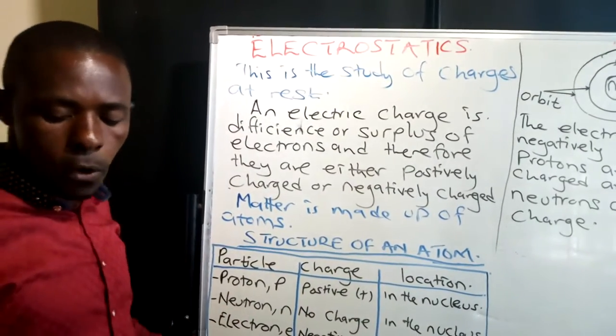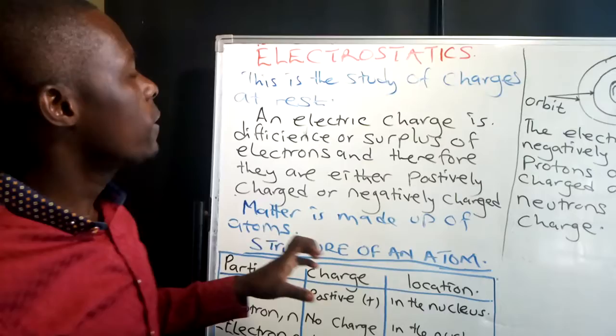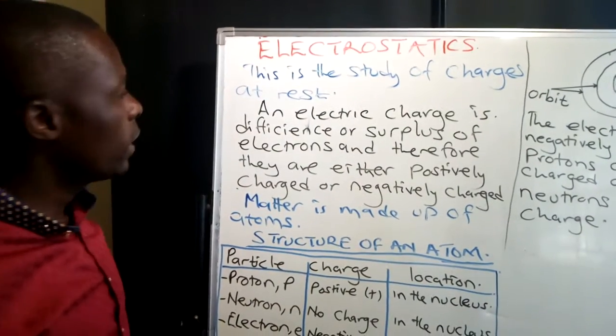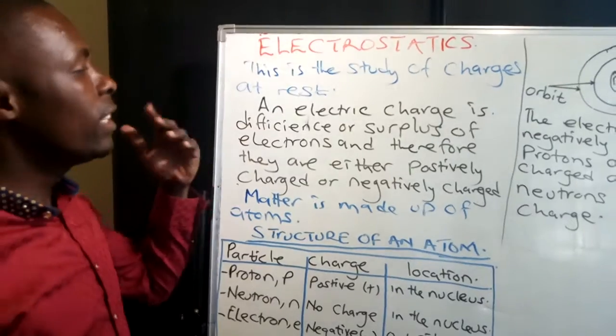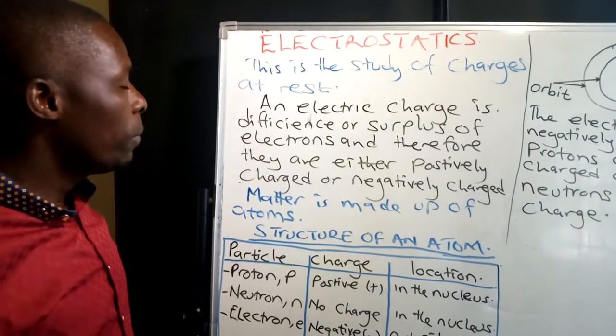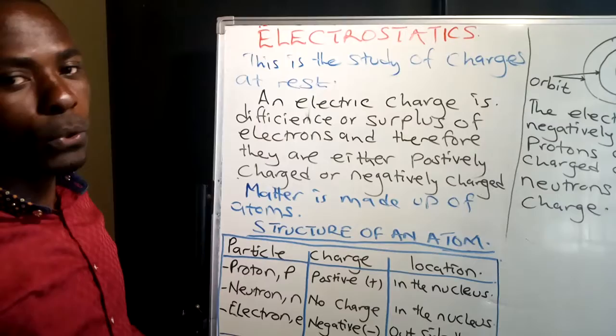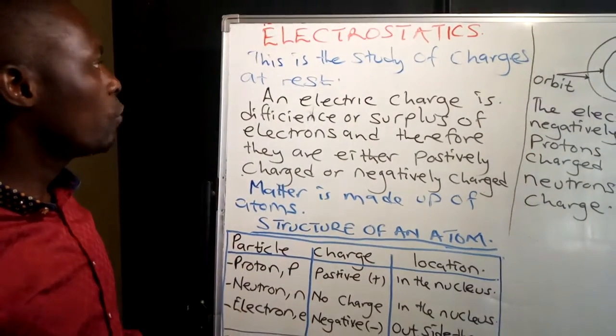This is so common when we deal with things which are nonconductors. Like for example when you were still younger you could get a pen, you rub it in your hair and then you begin attracting papers or stones. That is what we call electrostatics.